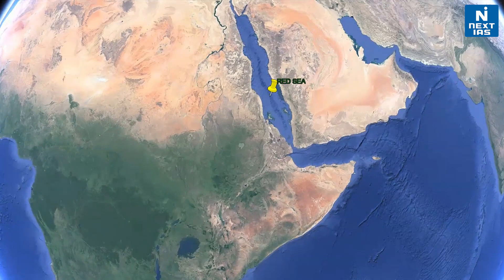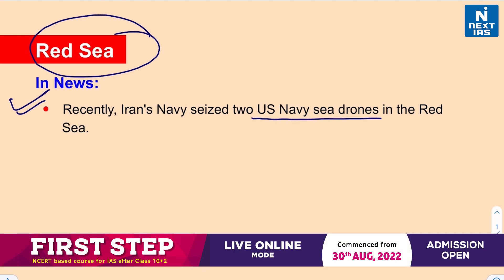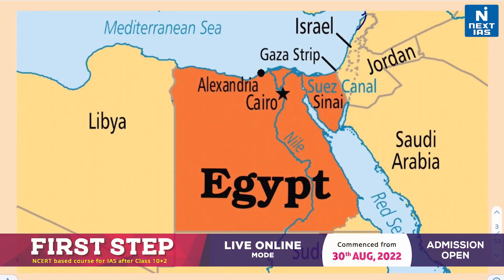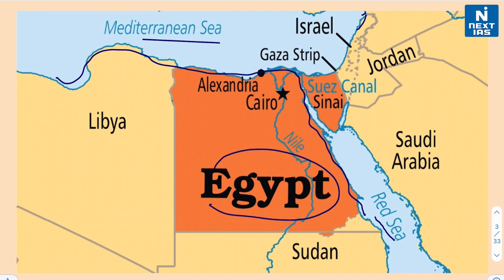Recently, the Red Sea has been in news as Iran's Navy seized two US Navy sea drones in the Red Sea region. As you can see in the map, here we have the Red Sea and this is the Mediterranean Sea. This is the entire African continent. Here we have Egypt and this is the Sinai Peninsula of Egypt. Sinai Peninsula is a part of the Asian landmass or the Middle Eastern region, but belongs to Egypt, and this one is the Middle Eastern region.